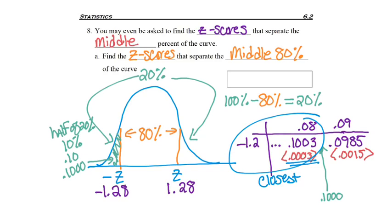Or if you weren't feeling confident with that, you could find the z-score for the top 10%. This top 10%, because we have 10% in each tail, would be found by saying, well, 100% of the curve minus 10% is 90%.